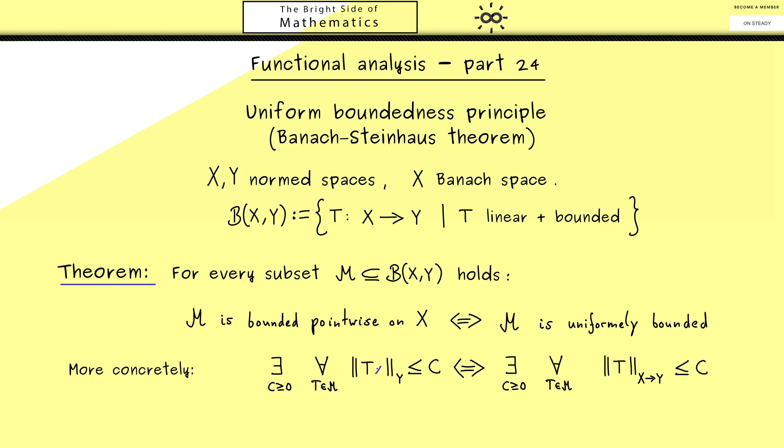Of course this looks similar, but beware you can choose the C here depending on x. Exactly this makes this bounded property pointwise because you first choose the x and then the constant.